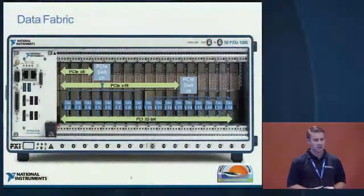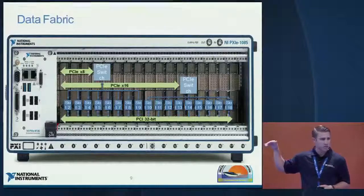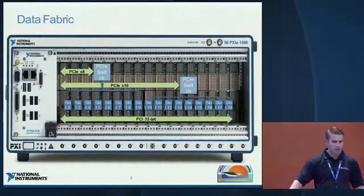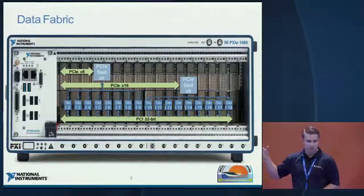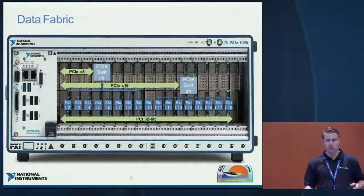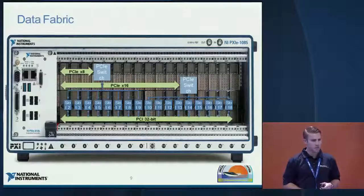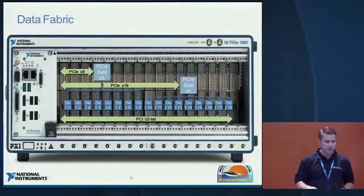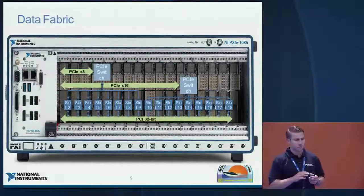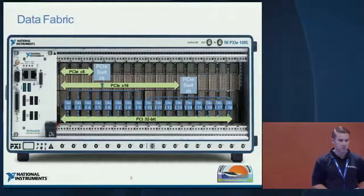On the data fabric side, PXI was originally introduced with a 32-bit PCI bus, which is a shared bus architecture where data bandwidth is shared across all modules in the system — fairly limiting. With the introduction of PCI Express, we now have a switched bus architecture that creates point-to-point dedicated data lanes. These lanes are pairs of serial transmit and receive paths that can be grouped together — x1, x2, x4, x8, x16 — to increase bandwidth on a per-slot basis. In this image, you can see an x8 link going to a PCI switch and then being split out between different module slots.